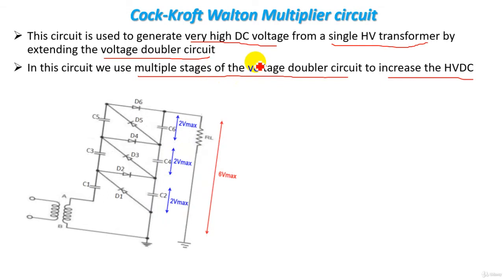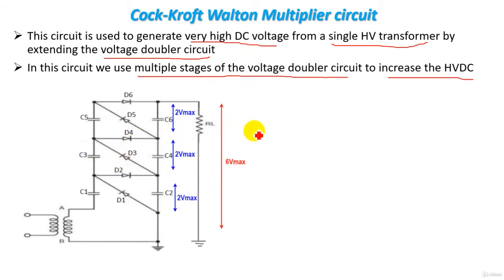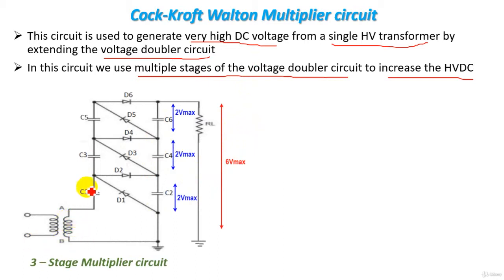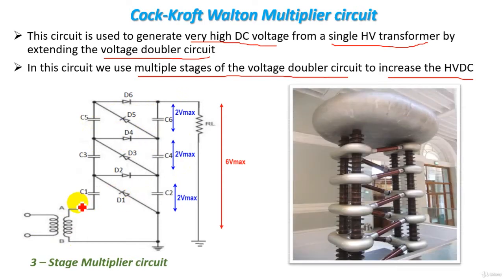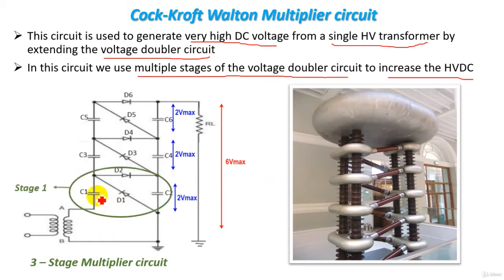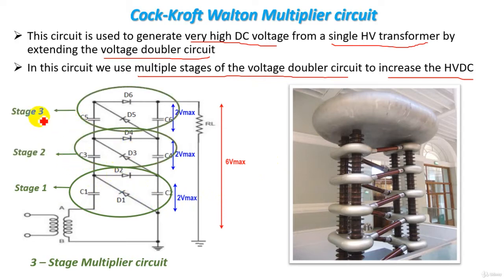This is our Cockcroft-Walton multiplier circuit — specifically a three-stage version. Each stage can be considered as a voltage doubler circuit. We have the high voltage transformer followed by three stages of voltage multiplier circuit. Each stage consists of two diodes and two capacitors, just like a voltage doubler circuit. This is the actual circuit in the high voltage lab.